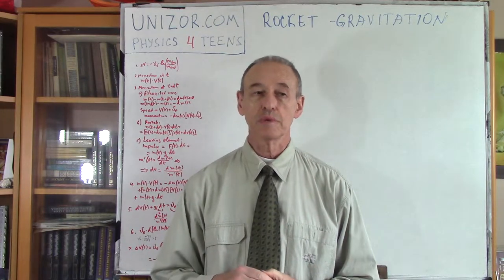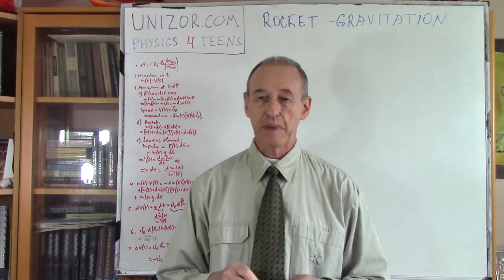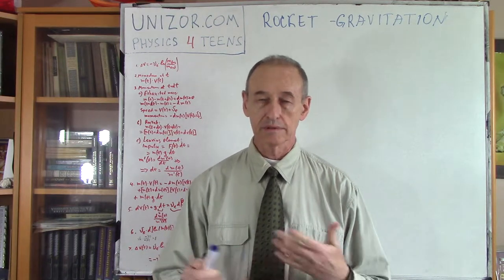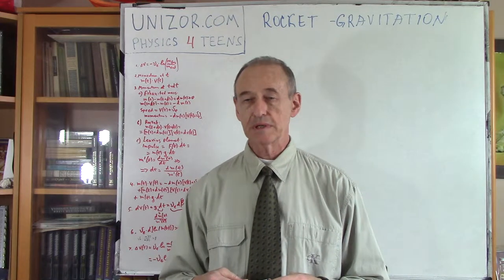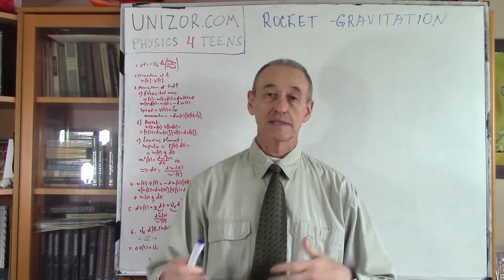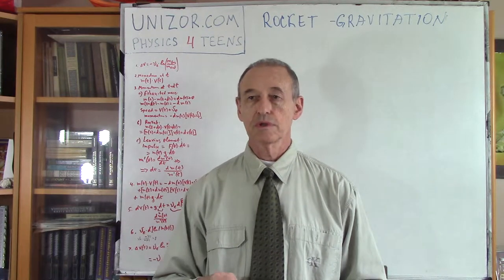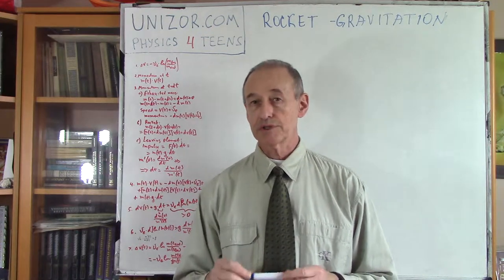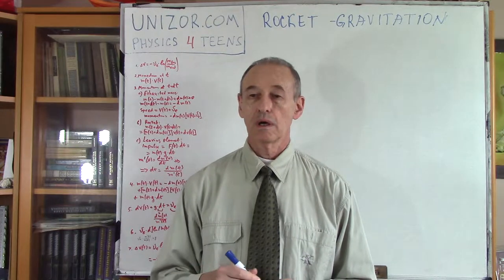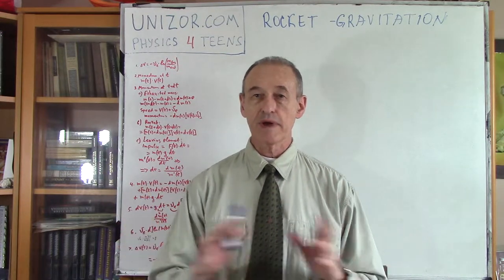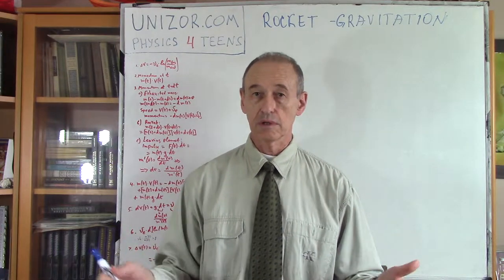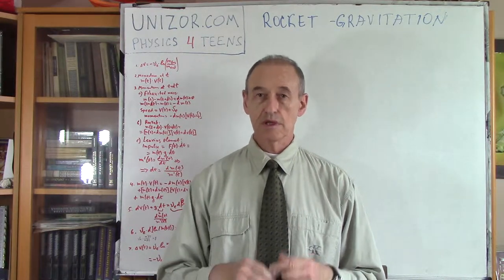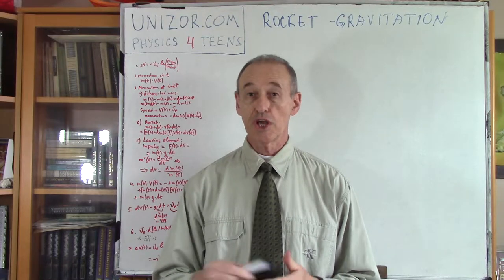We are talking about a major component of space exploration: how the rocket should be calculated, how all these parameters — the fuel speed, etc. — if we are leaving the Earth and trying to launch the rocket into orbit. Before, when we were talking about the ideal rocket equation, we were talking about space without any kind of external forces, external gravitational fields, for instance. Now we will introduce this component into the equation and see how it changes the equation.